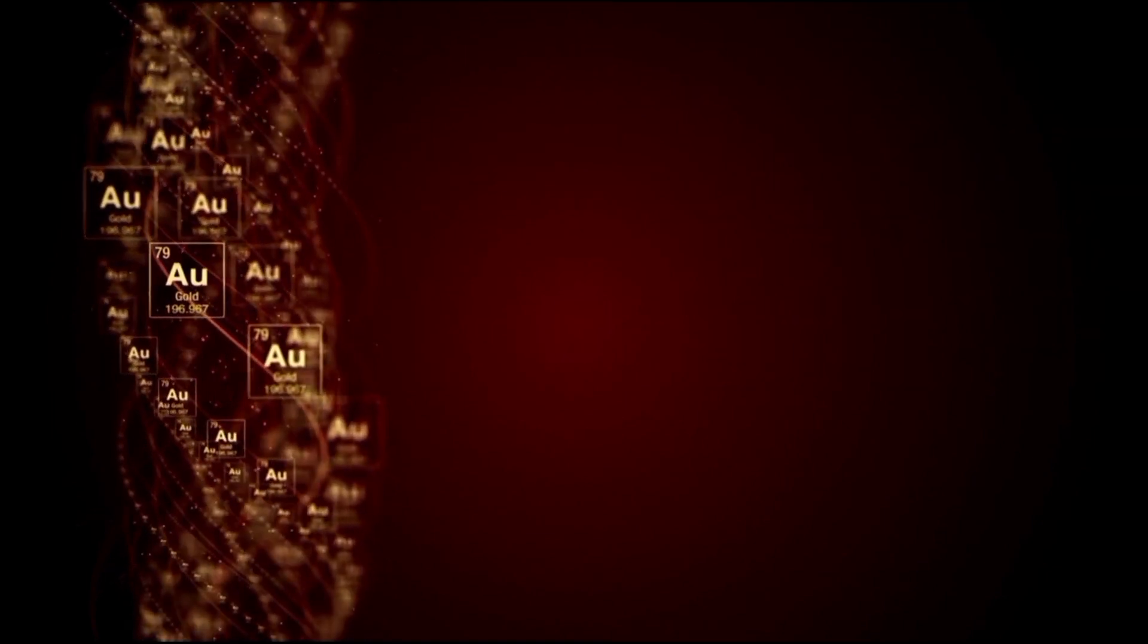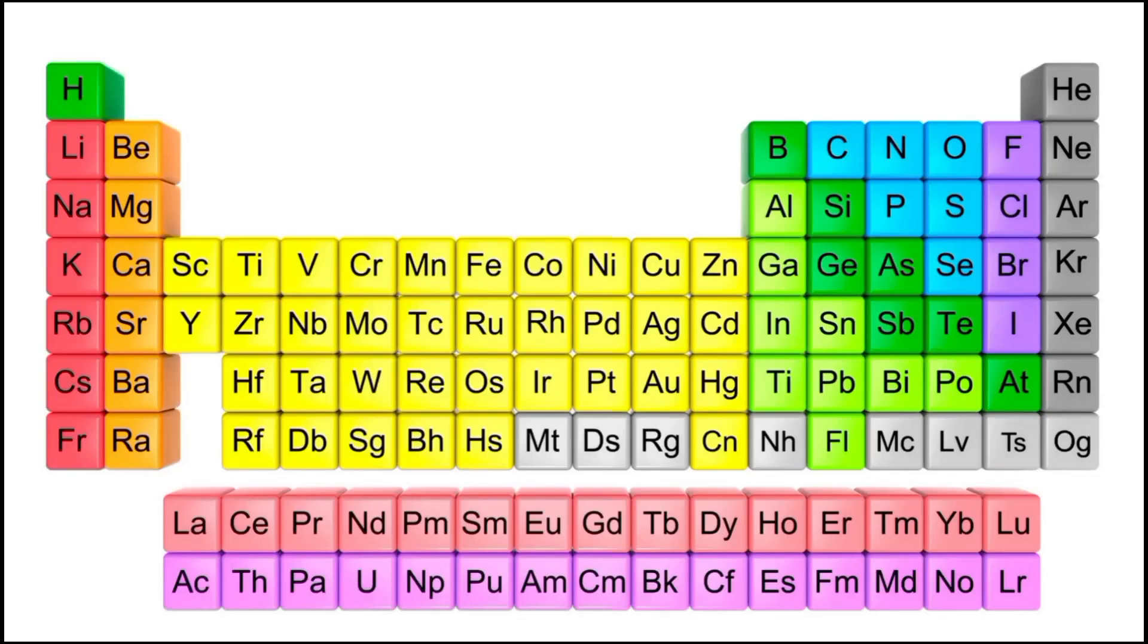The table structure consists of periods and groups. Periods are horizontal rows and groups are vertical columns. There are seven periods and 18 groups in the modern periodic table. Each element in a period has one more proton and one more electron than the element preceding it, resulting in a gradual increase in atomic number and mass as you move from left to right across a period.